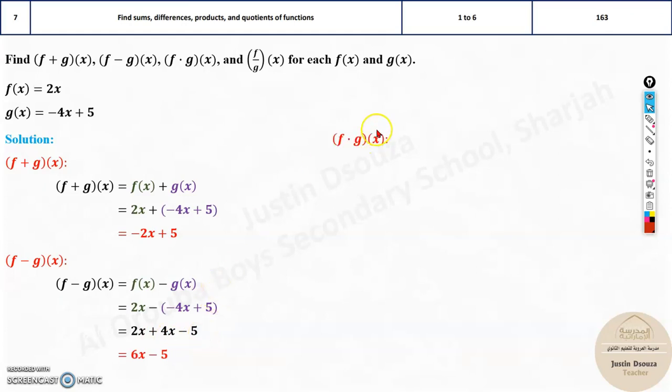To find the product, all you need to do is multiply f of x and g of x. Use the distributive property. 2x times minus 4x would be negative 8x squared, and 2x times 5 is 10x. That's it, that's the answer. It's very basic, very simple.